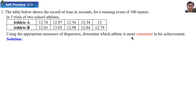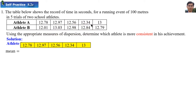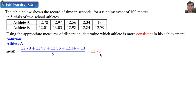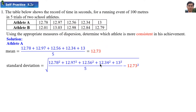Using the appropriate measures of dispersion, determine which athlete is more consistent in his achievement. To find the consistency of achievement, the measure of dispersion we use is standard deviation, and to find standard deviation we need to find the mean. The mean for Athlete A is 12.73. The standard deviation equals the square root of variance; we square all the values, add them, divide by the total of 5, minus the mean squared, giving a standard deviation of 0.2506. Then we find the values for Athlete B.